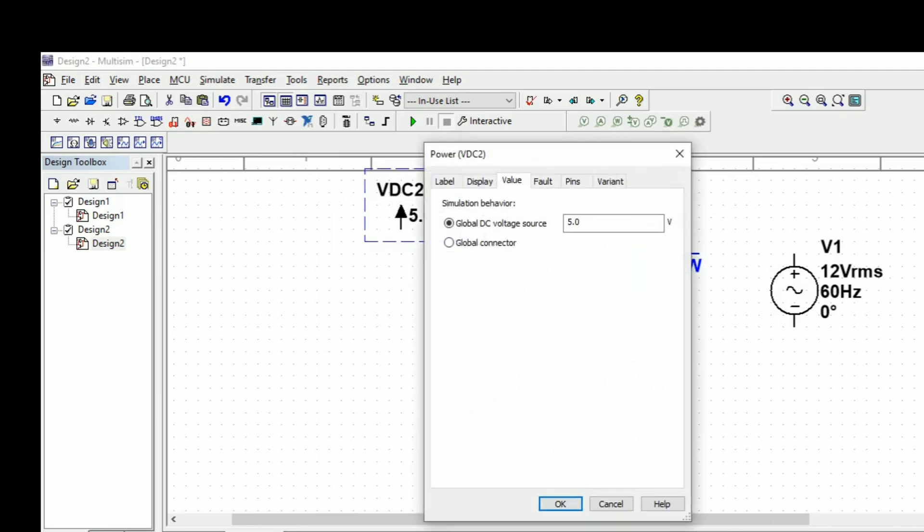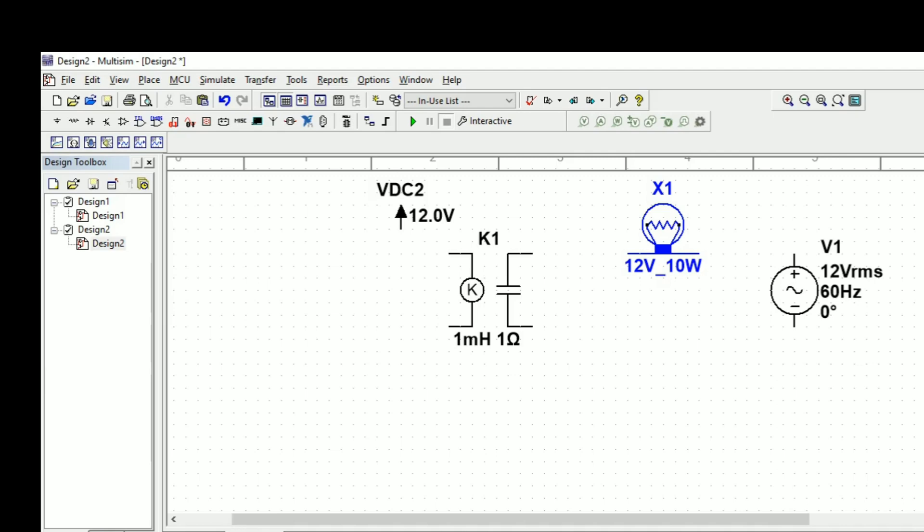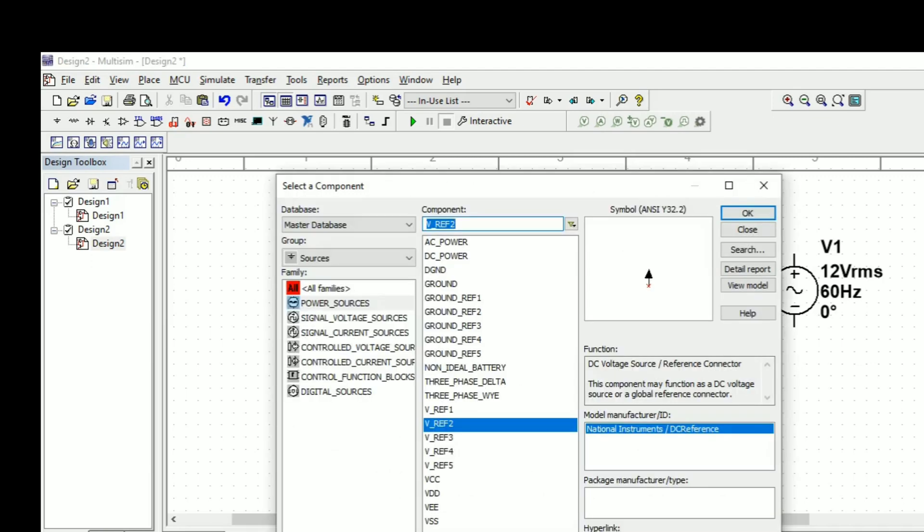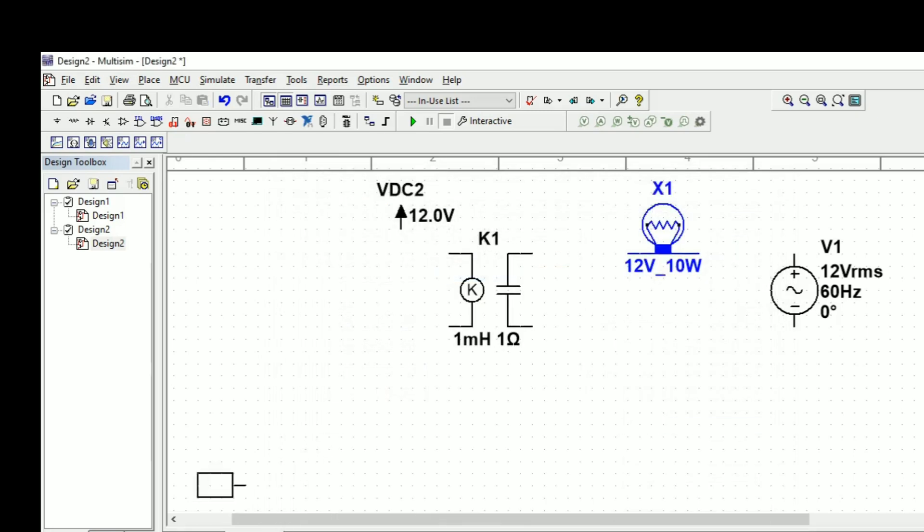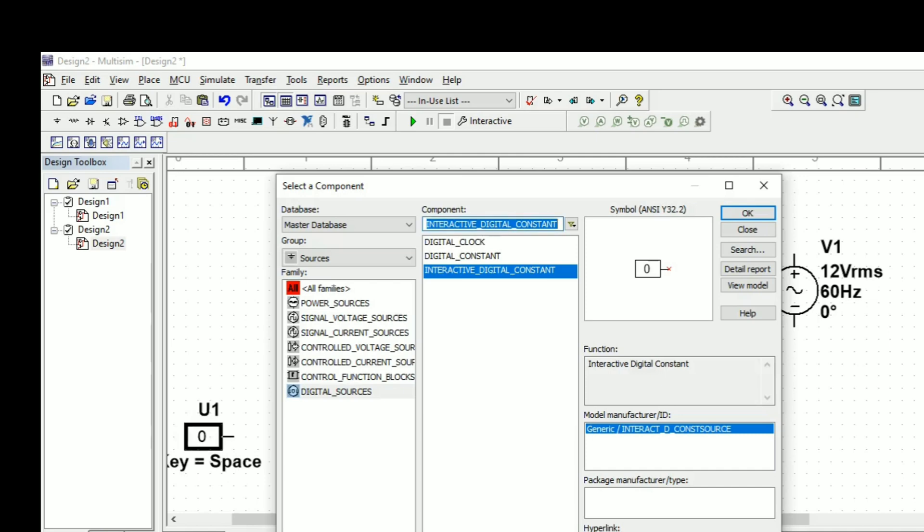Here at this reference voltage we will change the value as 12 volt. Next, to turn on this relay we need to give the digital circuit, either it may be 1 or 0.